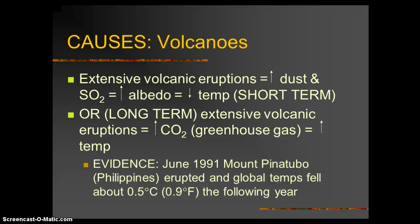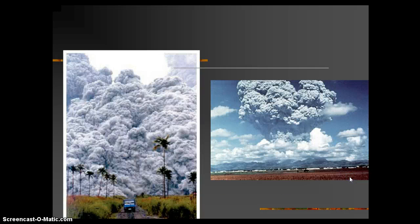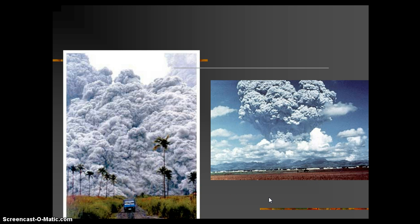There was a clear line of evidence in 1991 when Mount Pinatubo in the Philippines erupted. The following year, global temperatures fell half a degree Celsius — 0.9 degrees Fahrenheit. That eruption would block the sunlight for sure. But once that dust settles, you have the CO2 impacting, and so temperatures won't fall — they're actually going to rise.